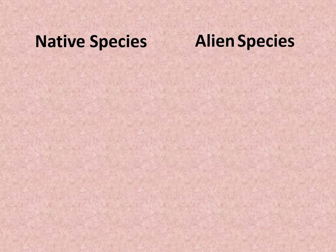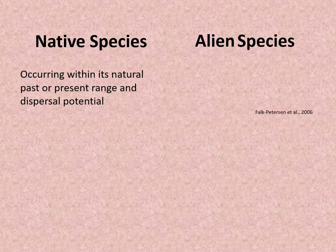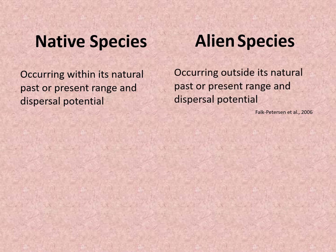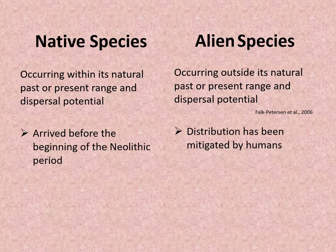Let us differentiate what is a native species from a non-native or alien species. A native species is an organism occurring within its natural past or present range and dispersal potential, whereas a non-native or alien species is an organism occurring outside its natural past or present range and dispersal potential. Before the introduction of animal raising and farming, humans were considered natural dispersal agents similar to animals. Hence, species introduced before the beginning of the Neolithic period are considered native. Beyond this period, species distributed outside their natural range that are primarily mitigated by humans are considered alien species.